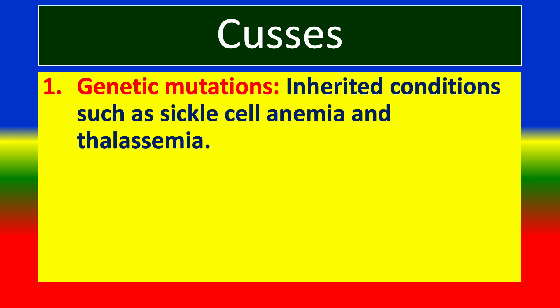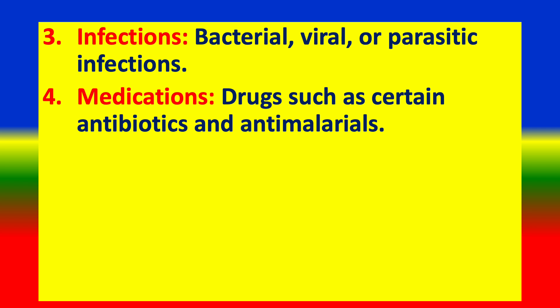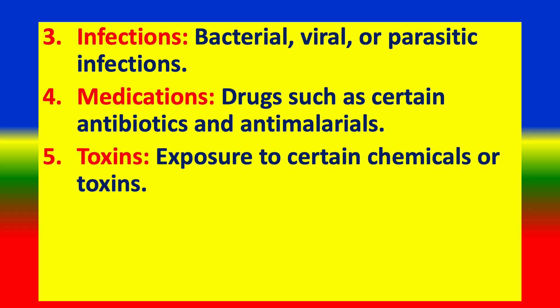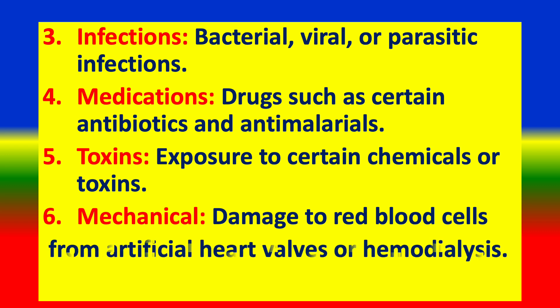Causes: (1) Genetic mutations — inherited conditions such as sickle cell anemia and thalassemia. (2) Autoimmune disorders — the body's immune system attacks its own red blood cells. (3) Infections — bacterial, viral, or parasitic infections. (4) Medications — drugs such as certain antibiotics and anti-malarials. (5) Toxins — exposure to certain chemicals or toxins. (6) Mechanical damage to red blood cells from artificial heart valves or hemodialysis.